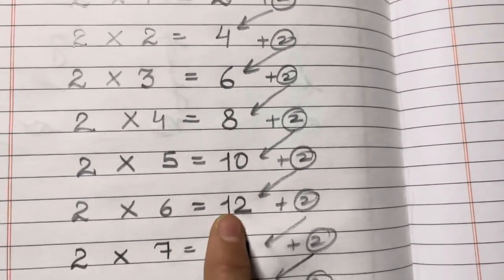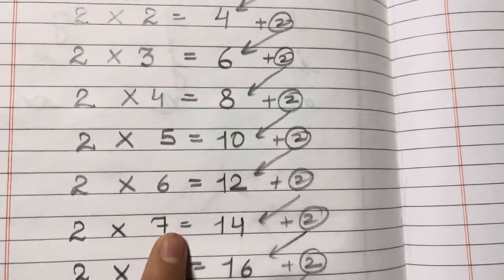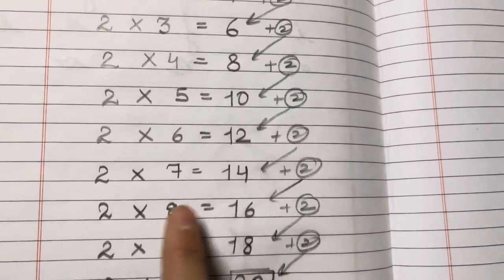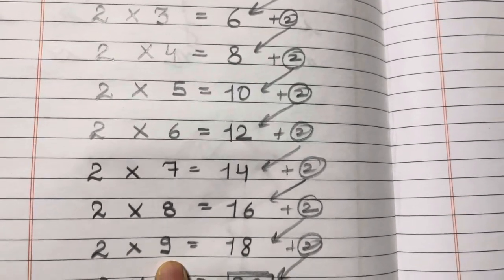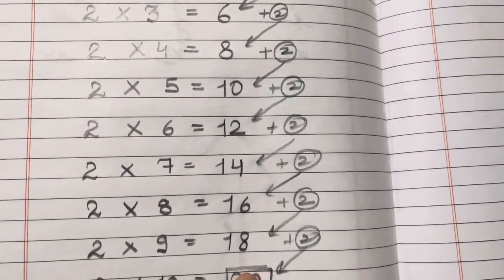2 6s are 12, 2 7s are 14, 2 8s are 16, 2 9s are 18 and 2 10s are 20.